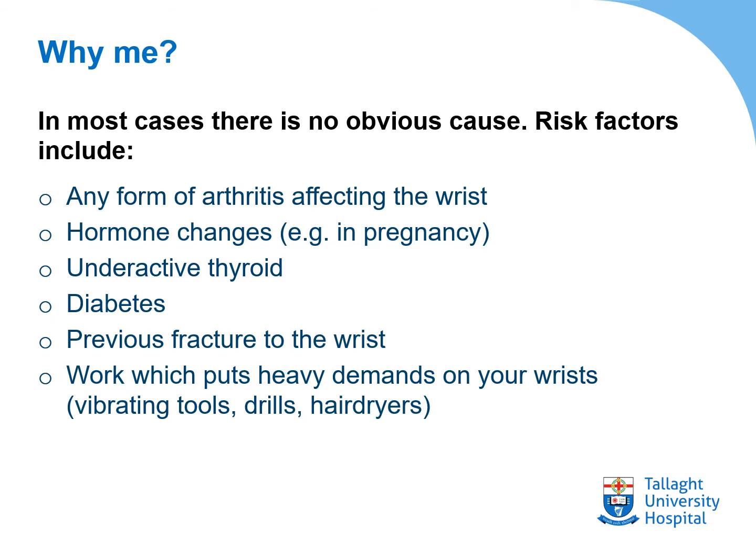You may ask, why am I affected by carpal tunnel syndrome? Well, in most cases there's no obvious cause. Risk factors may include any form of arthritis affecting the wrist — often because of bony changes and inflammation. Hormone changes are quite common in pregnancy. Conditions such as an underactive thyroid and diabetes are linked with an increased risk. Previous fracture to the wrist, or work which puts heavy demands on your wrists, are also risk factors.